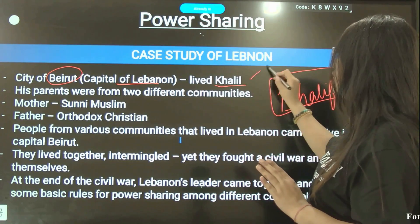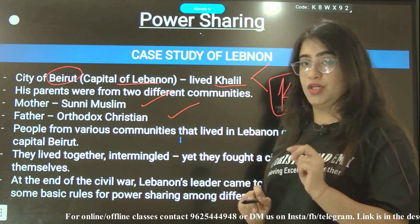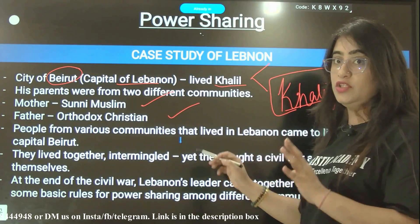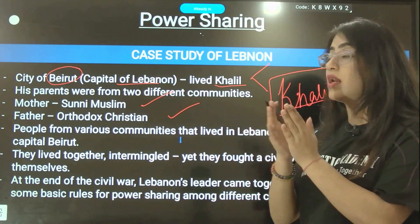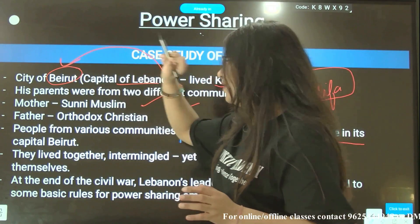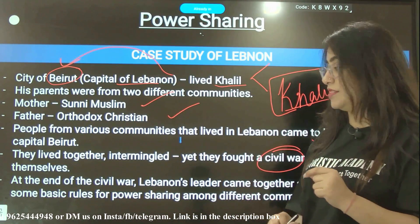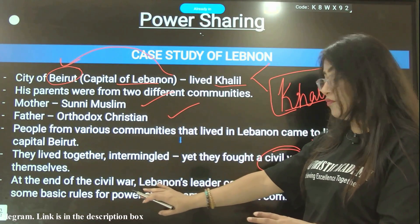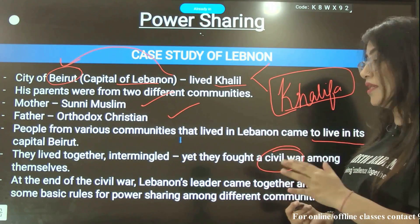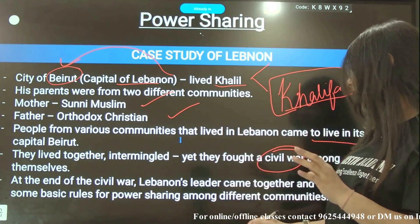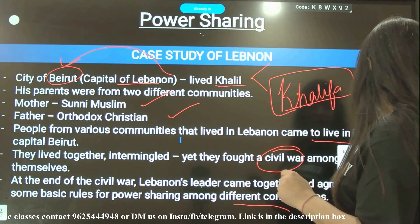Khalil's parents were from two different communities — his mother was Sunni Muslim and his father was Orthodox Christian. People from various communities lived together, intermingled, yet they fought a civil war among themselves. At the end of the civil war, Lebanon's leaders came together and accepted a model for how to share power among the different communities.